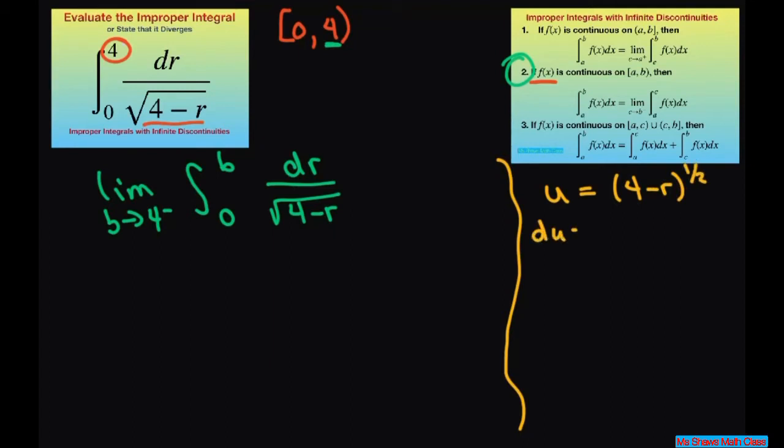We'll differentiate u. That's going to be 1 half times 4 minus r to the negative 1 half power times the derivative of negative r, which is negative 1 dr. Don't worry, I'm going to simplify this. You get du equals negative 1 divided by 2 square root of 4 minus r.